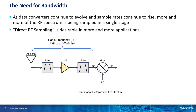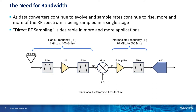What the mixer is doing is translating the RF signal down to a lower intermediate frequency that can be digitized. The IF then goes through an IF amplifier and a narrow bandpass filter that matches the sample range of the A to D, where it's actually digitized. Typical IFs are 70 to 500 MHz, which is a pretty common range. So now let's take a look at how we would accomplish this with direct RF sampling.